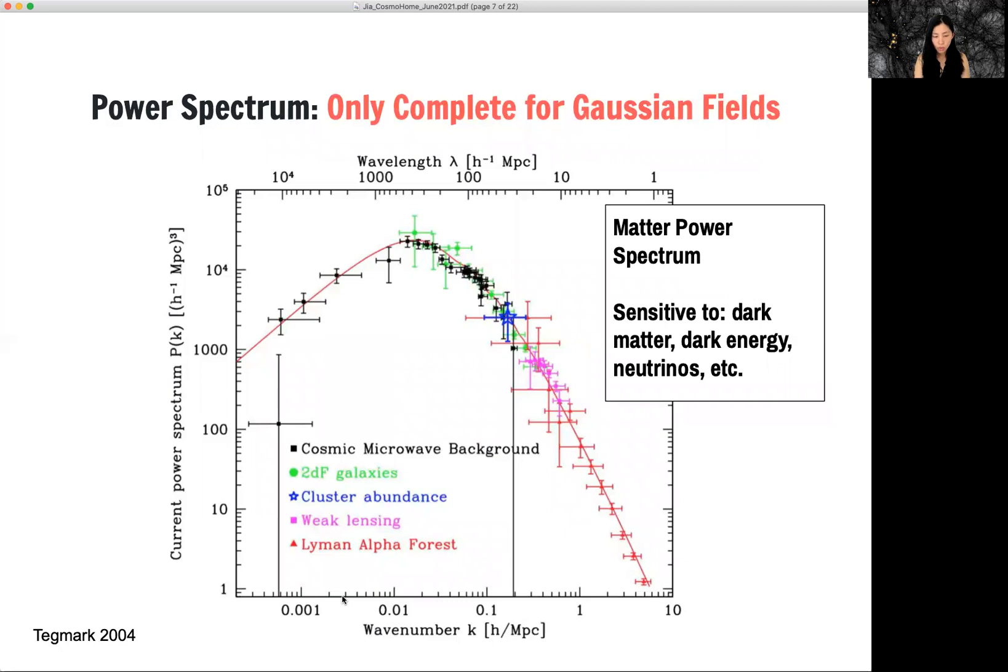However, one issue with the power spectrum is that it is only complete for Gaussian fields. Our universe is highly non-linear.